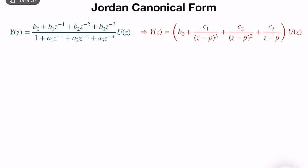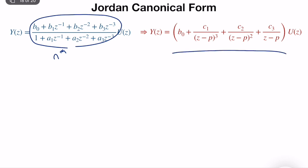Let's assume we have an n-th order transfer function where we have a repeated root. Let's assume we have a triple root such that we have z minus p, (z minus p) squared, and (z minus p) cubed — so p has a cardinality of 3 in the transfer function expression. We also have other different non-repeated roots. We'll assume a third-order transfer function and develop a block diagram structure with b0, c1, c2, c3 over z minus p, (z minus p) squared, and (z minus p) cubed, and try to realize this part.